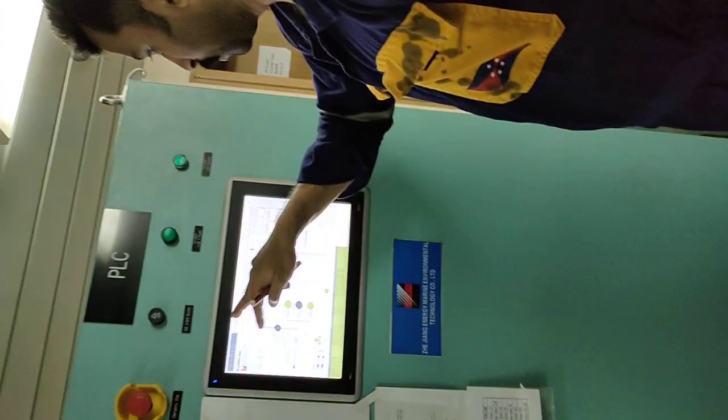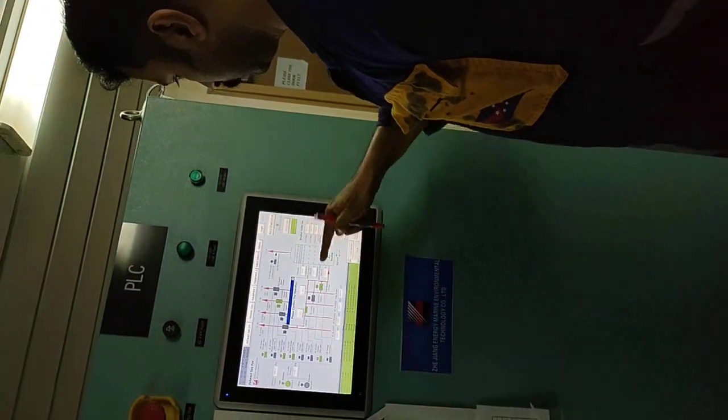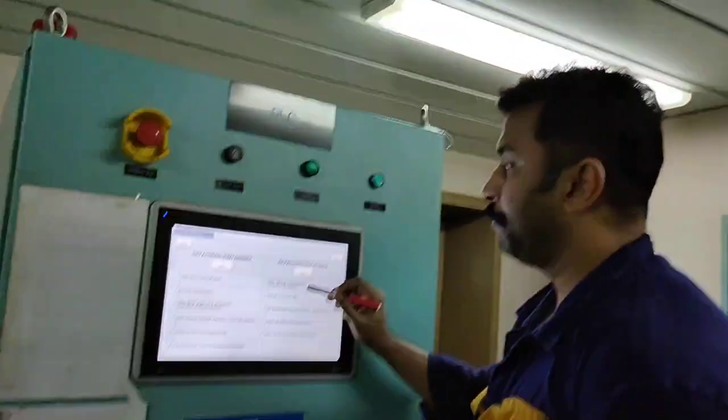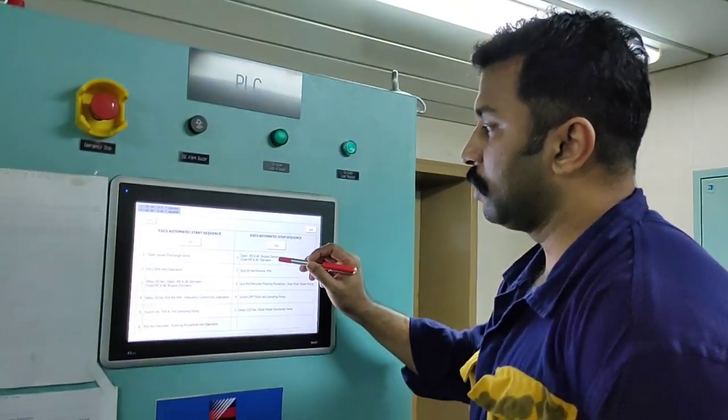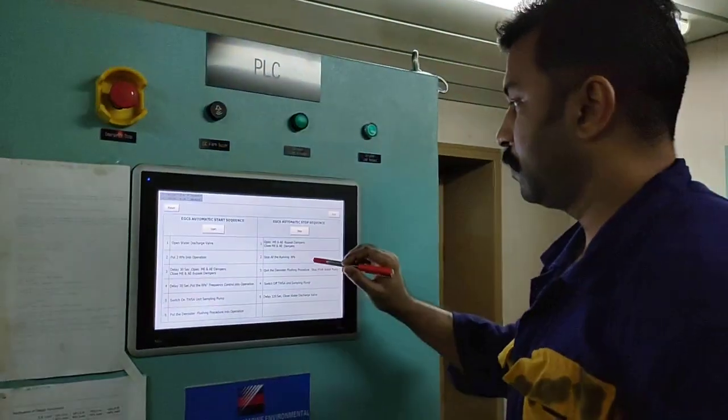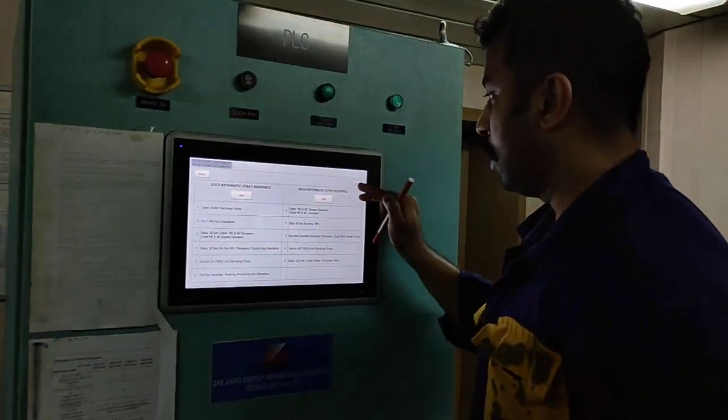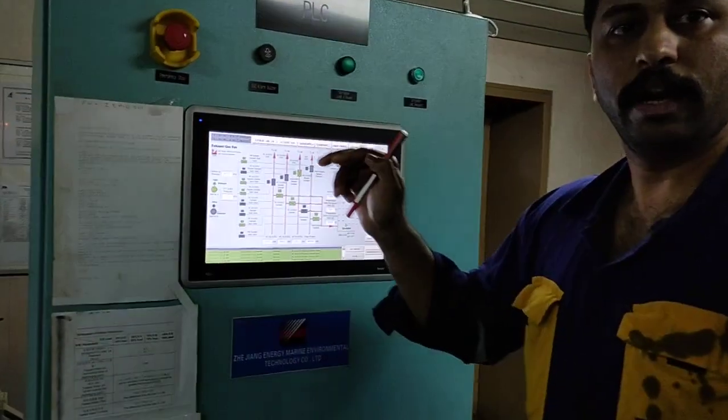Similarly, whenever you are stopping the system, it will follow the sequence. Anywhere it gets stuck, the automatic operation will not go further beyond. So you have to put the system again in manual, solve the issue and then put the system automatic back.